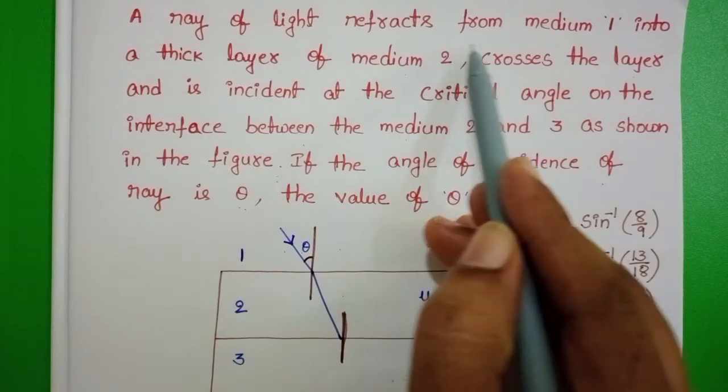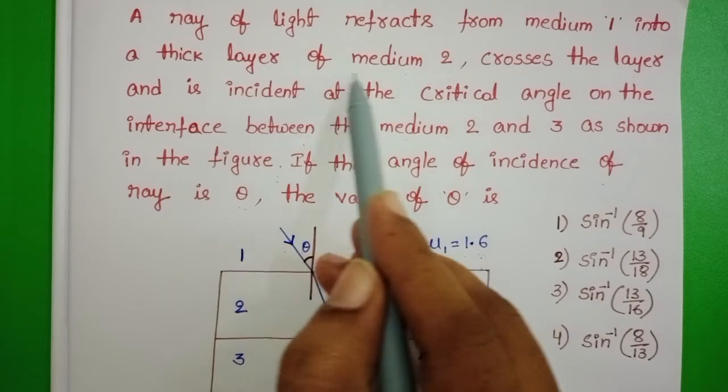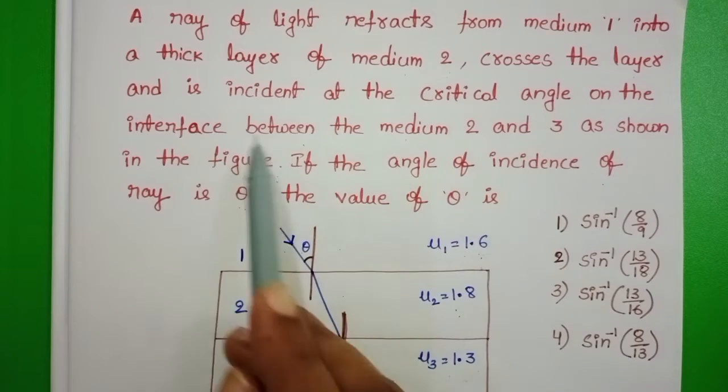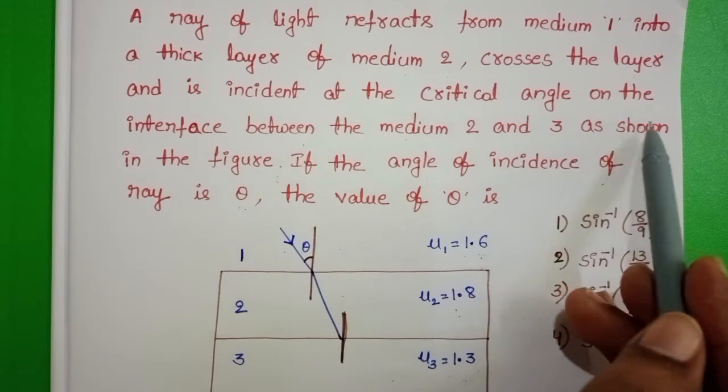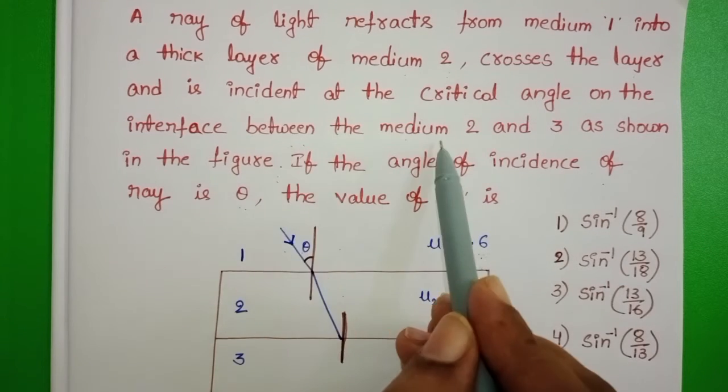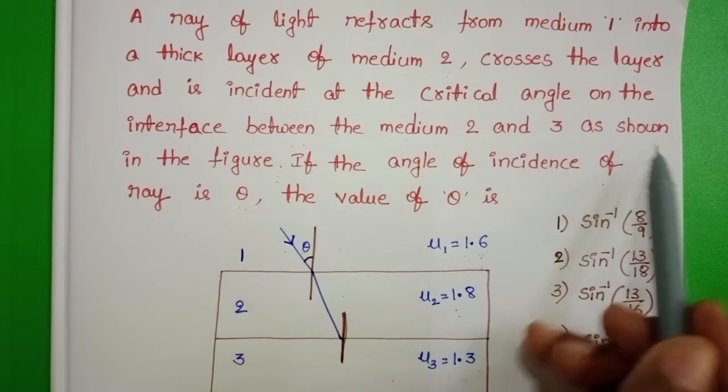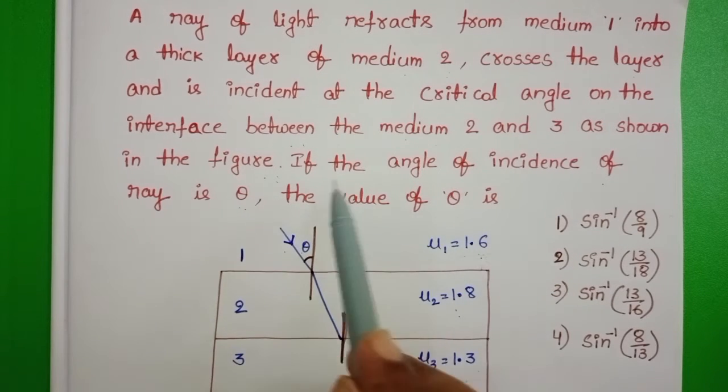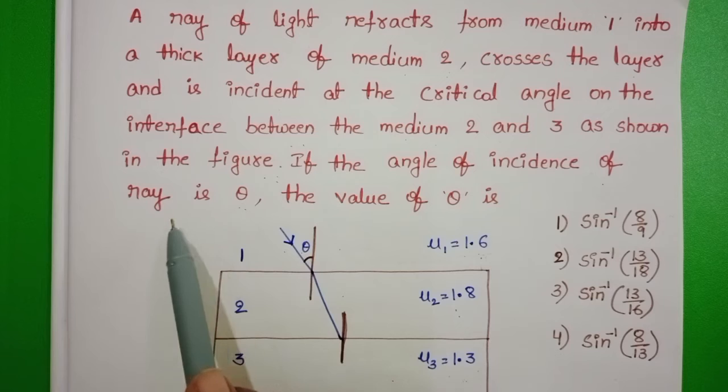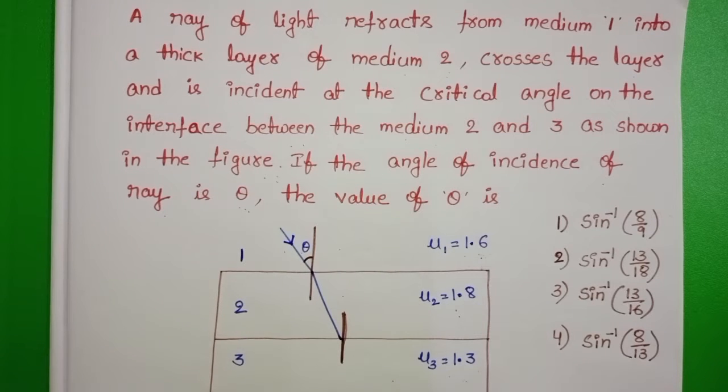A ray of light refracts from medium 1 into a thick layer of medium 2, crosses the layer and is incident at the critical angle on the interface between medium 2 and 3 as shown in the figure. If the angle of incidence of ray is theta, the value of theta is.